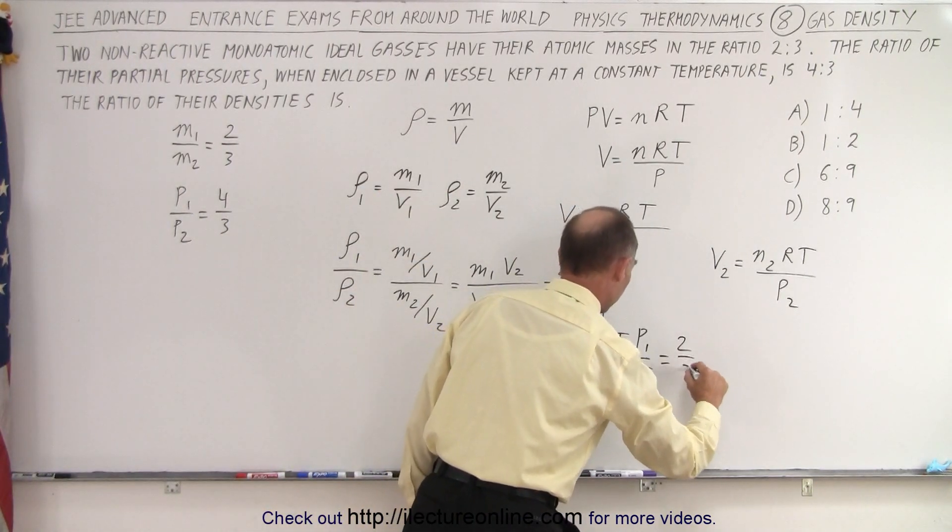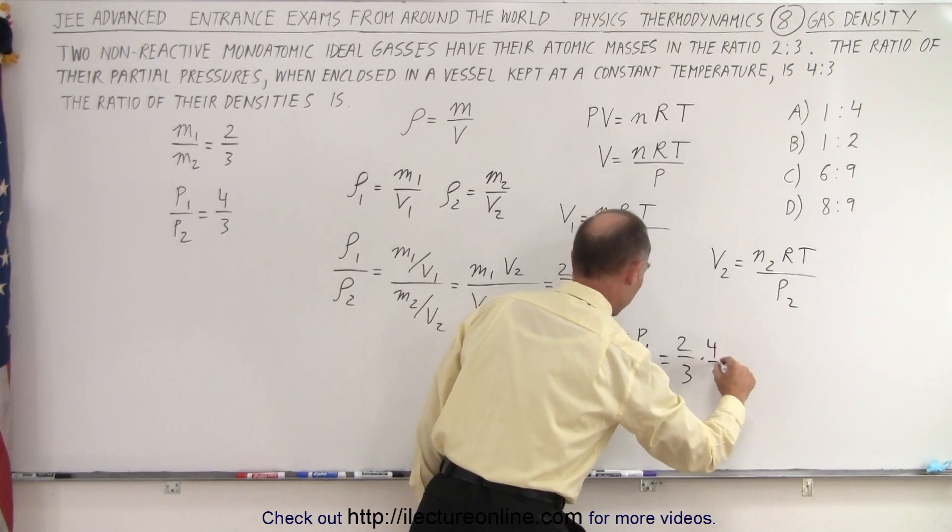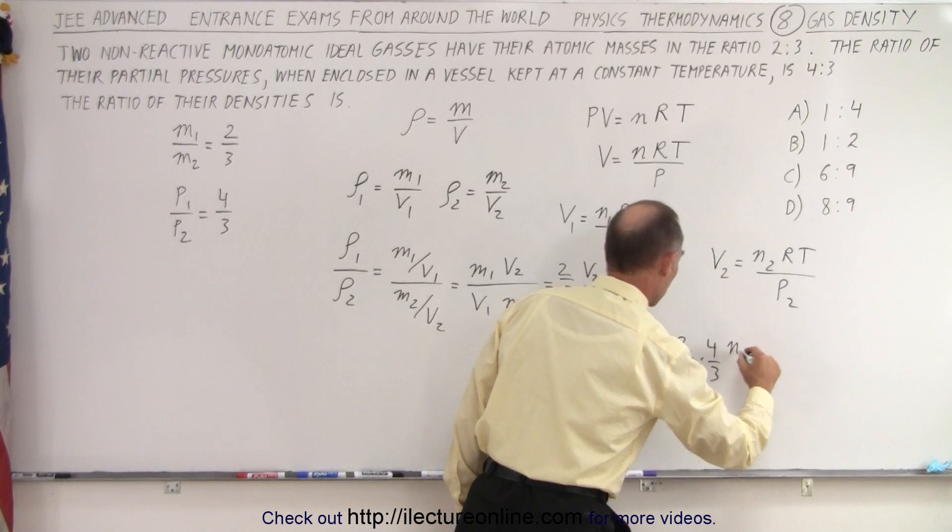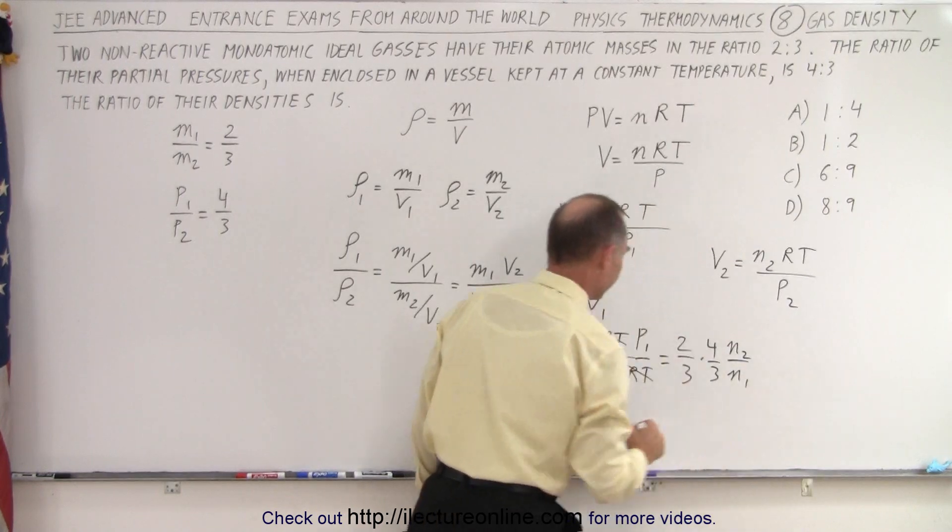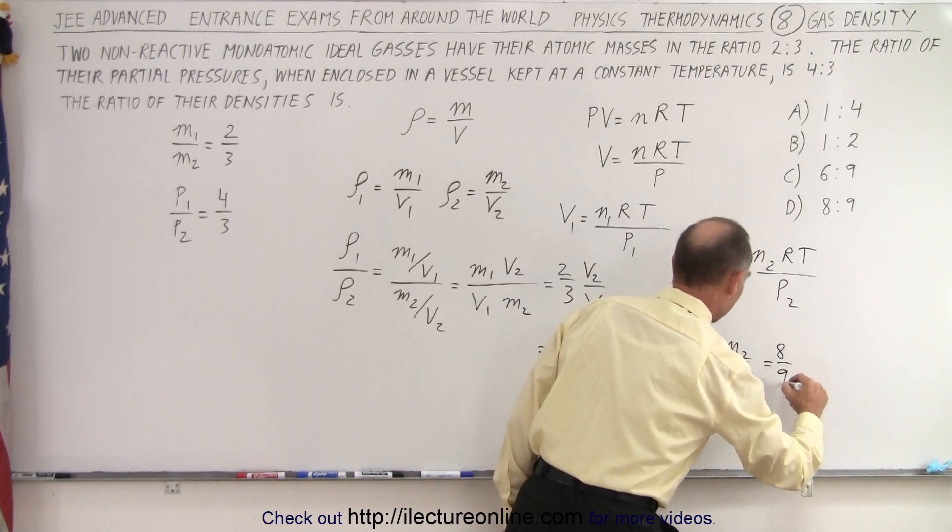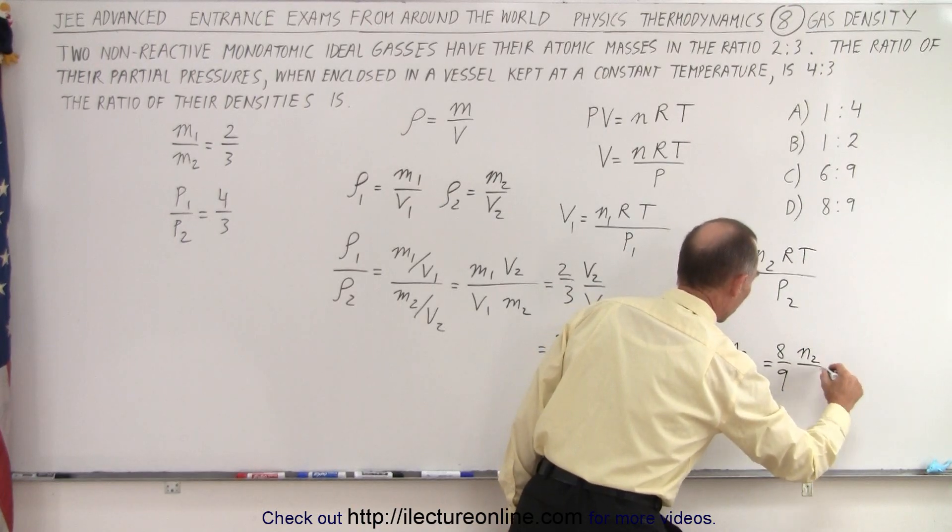So this becomes 2 thirds times 4 thirds times N2 over N1. And so this becomes equal to 8 over 9 times N2 over N1.